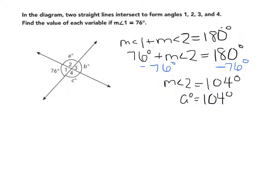Since we have intersecting lines, we know that we have vertical angles. The measure of angle 2 is a vertical angle to angle 4, so we know that A has to equal C, so C also equals 104 degrees.